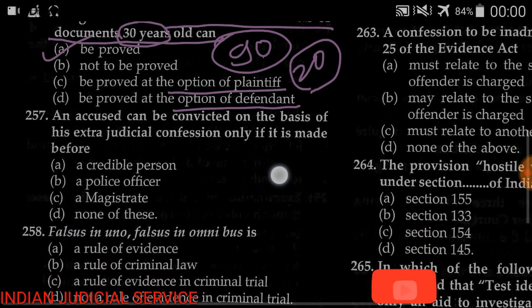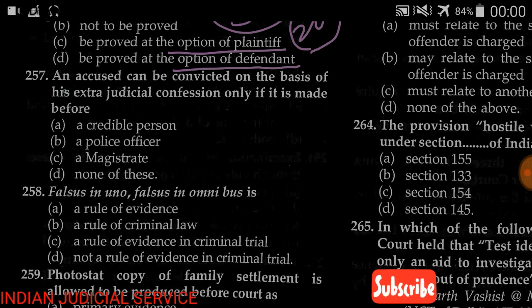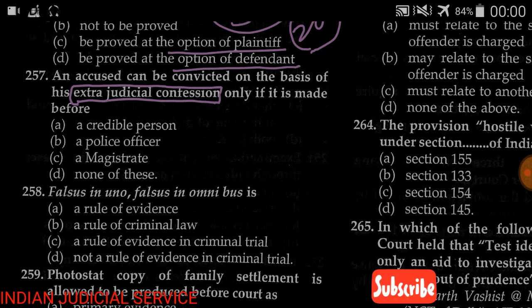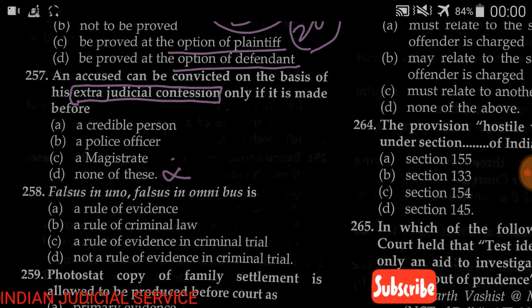Question number 257: The accused can be convicted on the basis of extra-judicial confession. There are two types of confession — intra-judicial (made before the court) and extra-judicial (made outside the court). Options: (A) only if made before a credible person, (B) police officer, (C) magistrate, (D) none of the above. The answer is option A — credible person. A magistrate's confession is intra-judicial, and a police officer's confession is irrelevant here, so the answer is a credible person.